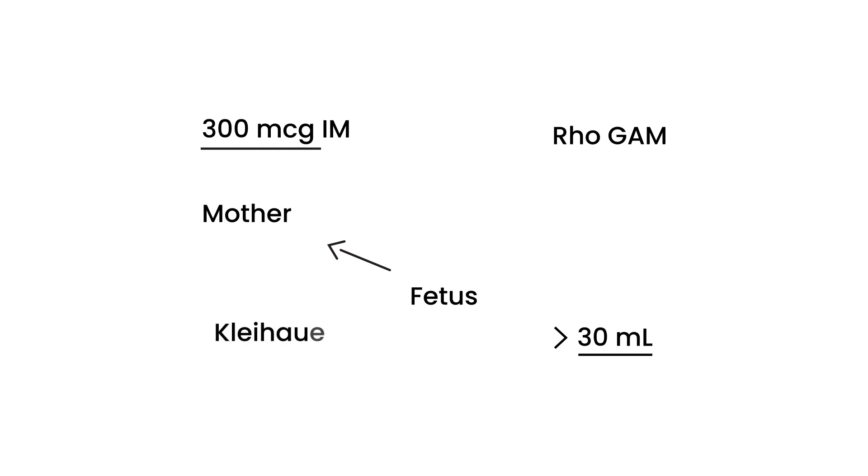It's called a Kleihauer-Betke test. The Kleihauer-Betke test essentially measures the amount of fetal blood that transferred over into the maternal circulation. For every 30 mLs, you give 300 mcg of RhoGAM. Let's say there was 60 mLs of blood that went from the fetus to the mother during pregnancy, then you'd probably give 600 mcg of RhoGAM. Very important test.